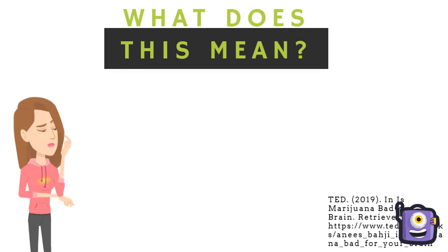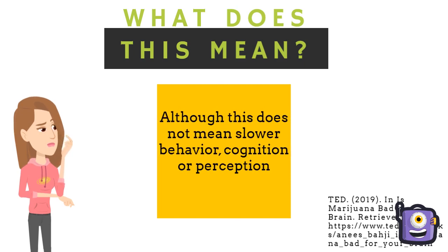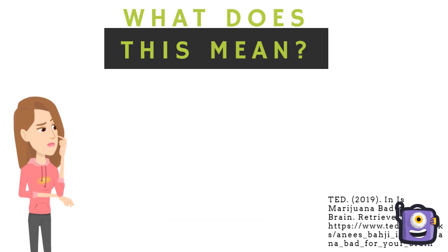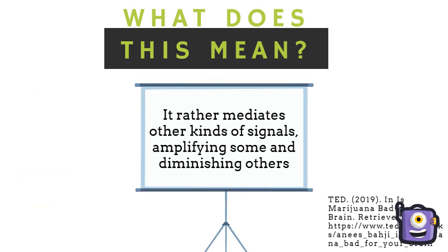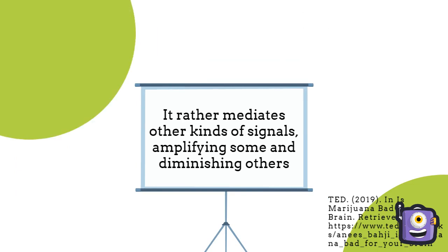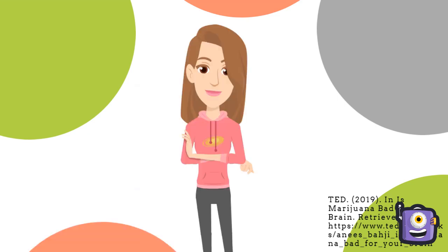The influence endocannabinoids have on the sending neuron is to slow down rates of neural signaling. For example, slowing down a signal of hearing could actually make hearing more intense, or slowing down sensory signals could actually intensify them.